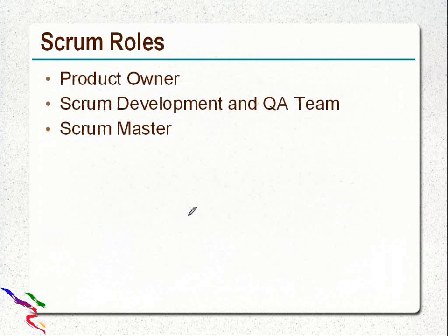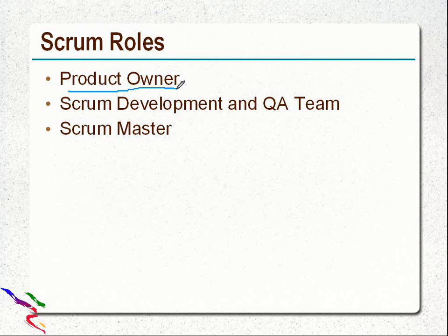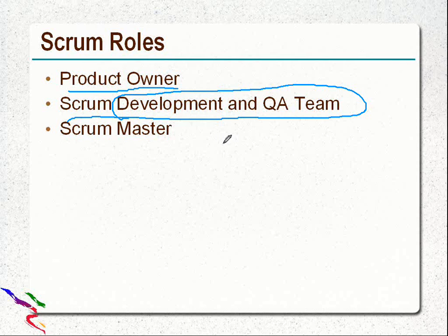Let's look at Scrum roles. First, the Product Owner — the product owner is basically a key stakeholder and represents the user or customer, and is responsible for the requirements for the release. Next, the Scrum Development and QA team. Although team members should be cross-functional and work in both development and testing, there are times when you need to separate out these teams. In most cases, if your team size is bigger than seven members, you normally break it into two parts: development team and QA team.